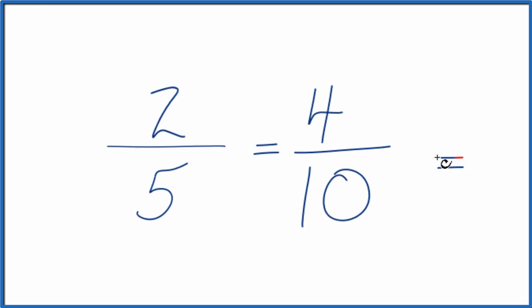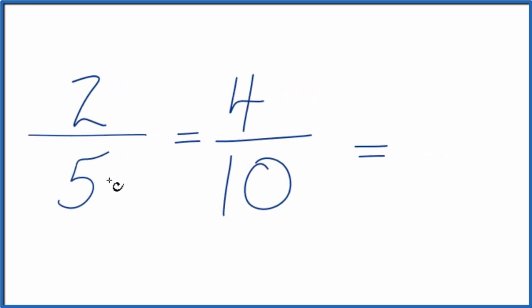Let's find another one. We could multiply the numerator and denominator by 3. 2 times 3 is 6, 5 times 3 is 15. Another equivalent fraction or equivalent ratio for two-fifths.